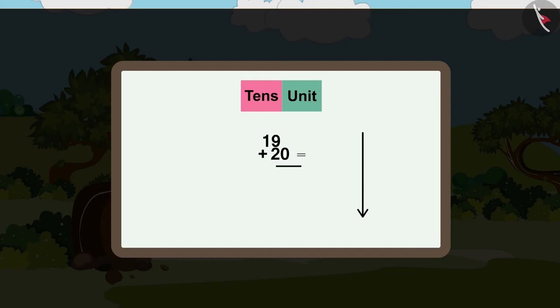Now children, we can write this in a vertical line too. This means we can write it in a standing line. Just like before, we will add the numbers written in the units place. 9 plus 0 is equals to 9. Next we will add the numbers written in the tens section.